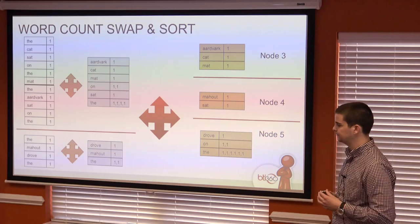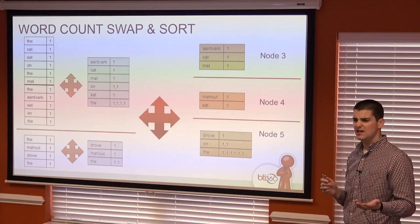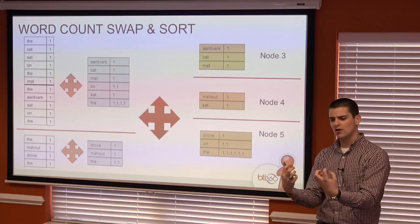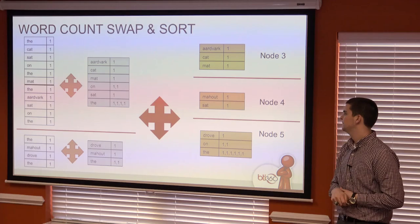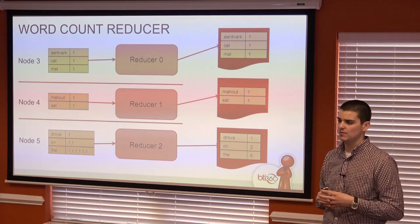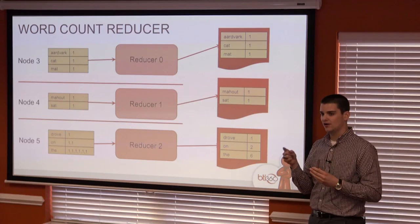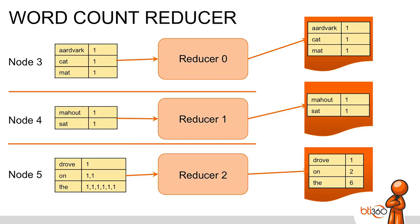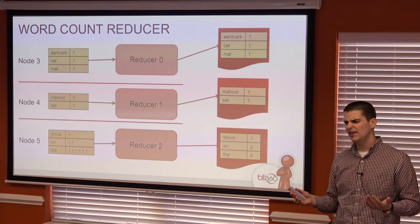Now we're ready for the reduce stage. We take the data separated from the map stage and co-locate it back together to produce information the user wants to see. The reducer for word count creates a simple summation — it looks at individual key values aggregated during shuffle and sort and outputs a final sum. For example, on node five the word 'the' has six ones concatenated together; the reducer outputs six. That, in the simplest terms, is the MapReduce paradigm using word count.